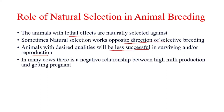For example, in many cows it has been seen that there is a negative relationship between high milk production and getting pregnant. In other words, animals that are producing high milk have a very low chance to get pregnant, and this may be due to different physiological events occurring in those animals.